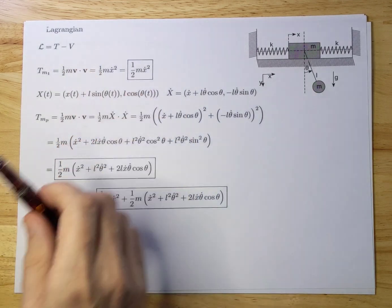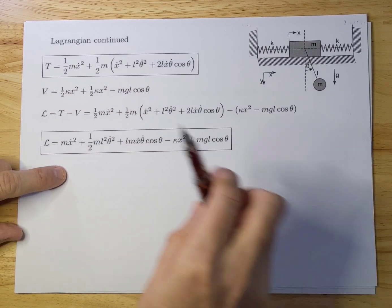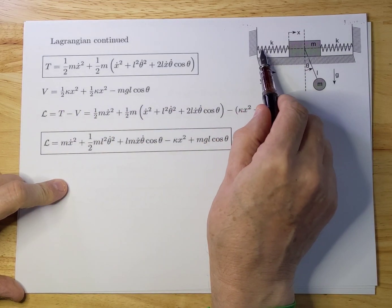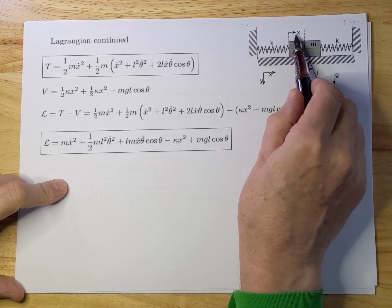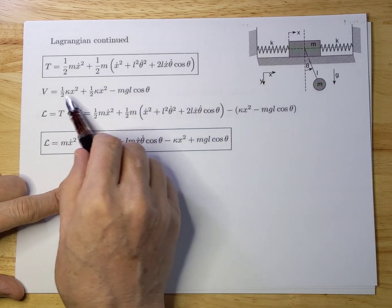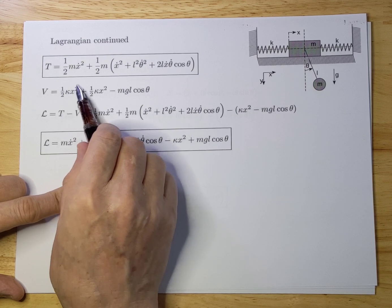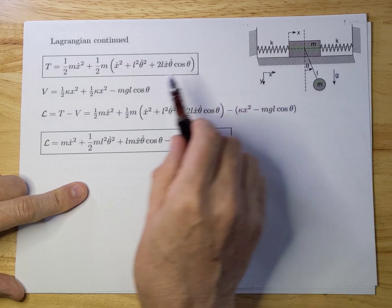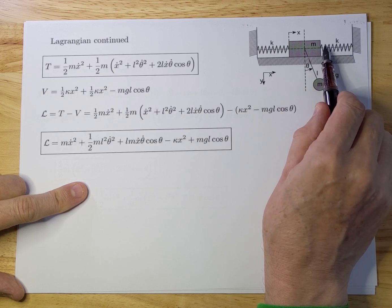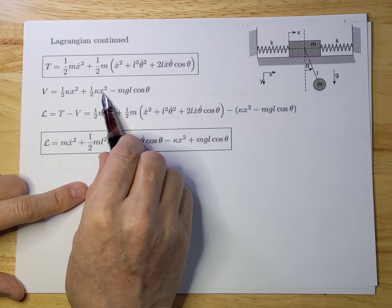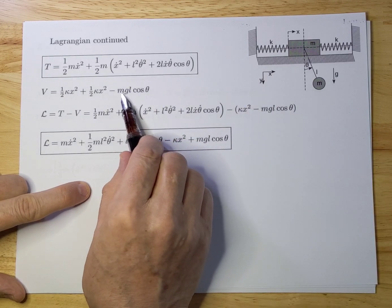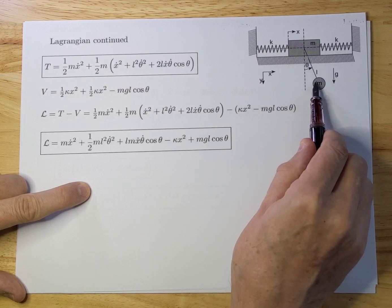Our next step is to calculate the potential energy. The spring on the left is only moved by the generalized coordinate x, since it is mounted to the ground on the left-hand side. So you immediately get one-half k x squared according to Hooke's law. The same applies for the spring on the right — you also get one-half k x squared. And then there is the potential energy of the mass hanging on the pendulum, which is minus MgL cosine theta — exactly the vertical length piece.